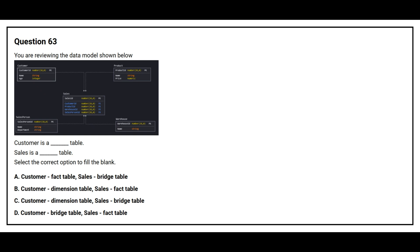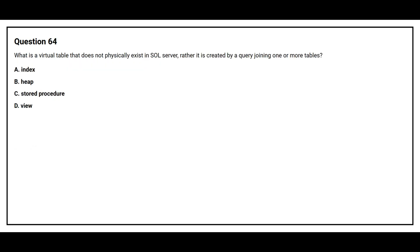Question 63: You are reviewing the data model shown below. Customer is a blank space table, Sales is a blank space table. Option A, customer fact table, sales brief table. Option B, customer dimension table, sales fact table. Option C, customer dimension table, sales brief table.